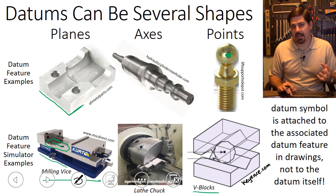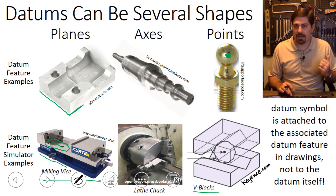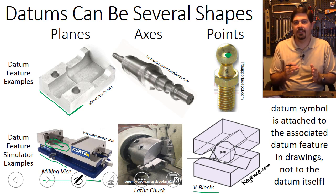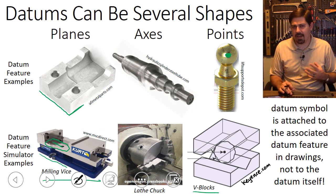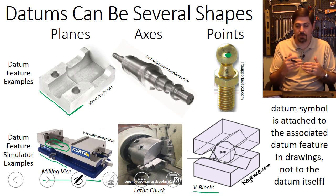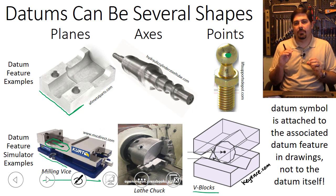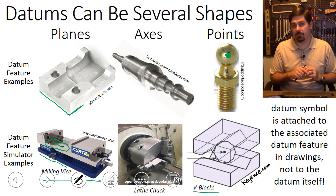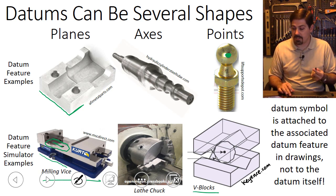The datum symbol is attached to the datum feature on drawings, not to the datum itself. There's not much difference for planar datums, but for axes and points there's a radius between the actual datum and the datum feature. So for a round part, you apply the datum to the outer surface of the cylindrical feature. For a sphere, you attach the datum label to the spherical surface, not to the middle point which is the actual datum you're trying to imply.